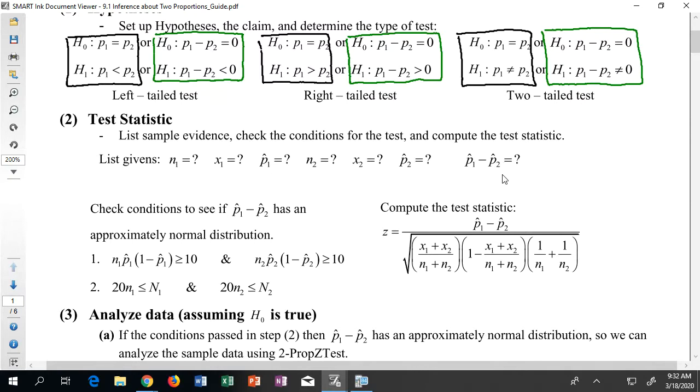One of the things that we're going to be interested in trying to determine is what happens when I take the subtraction of our two p's. This relates to the green hypotheses. Notice that if my two p's were the same, then when I subtract them I should get zero. That's why each of these H0 hypotheses can be rewritten as p1 minus p2 is zero.